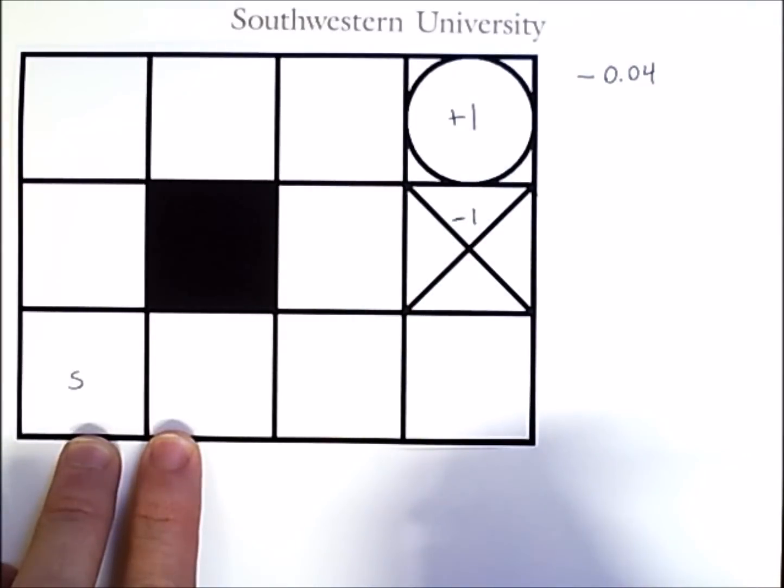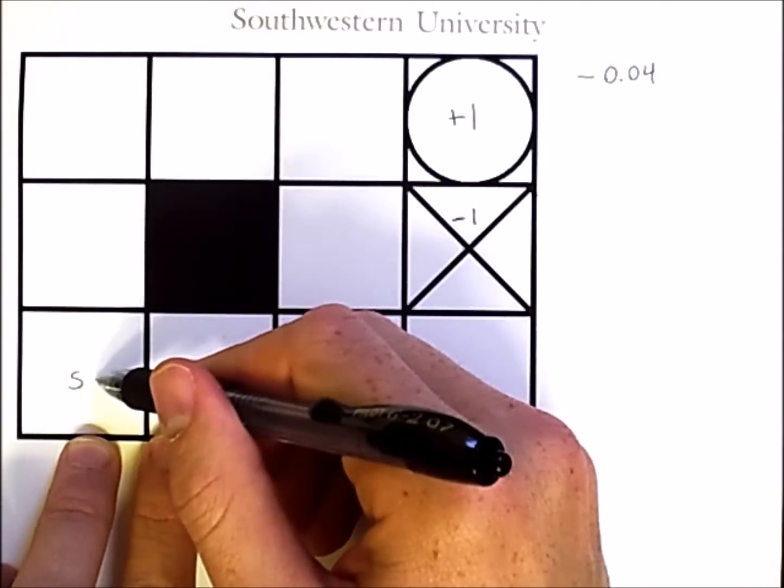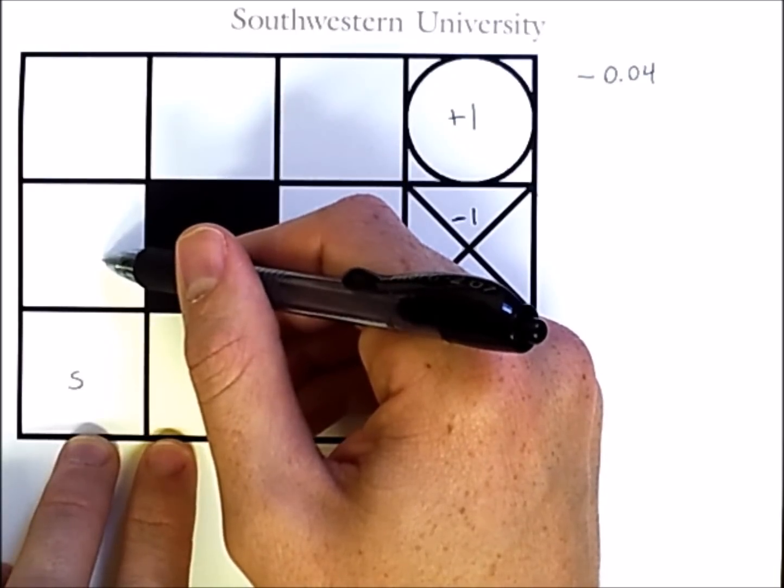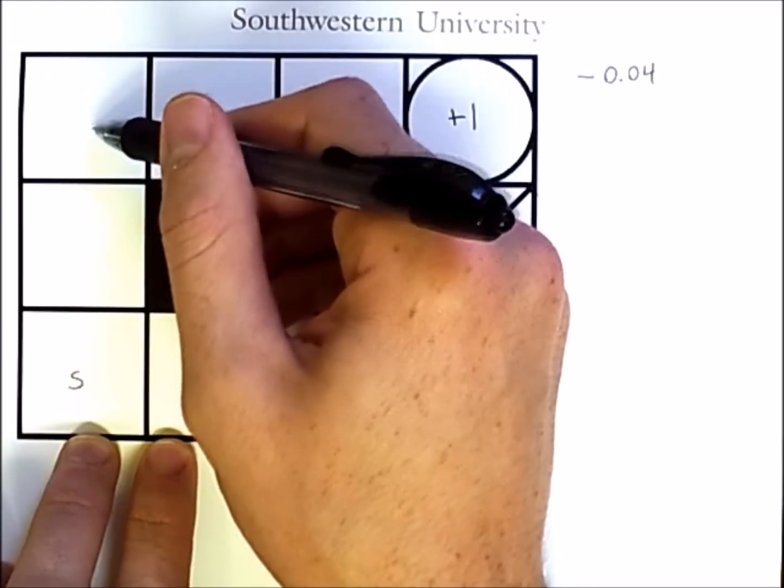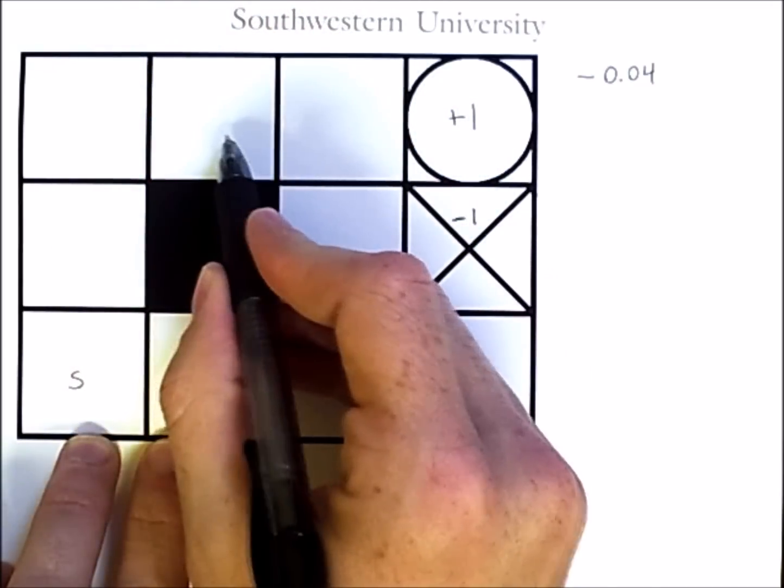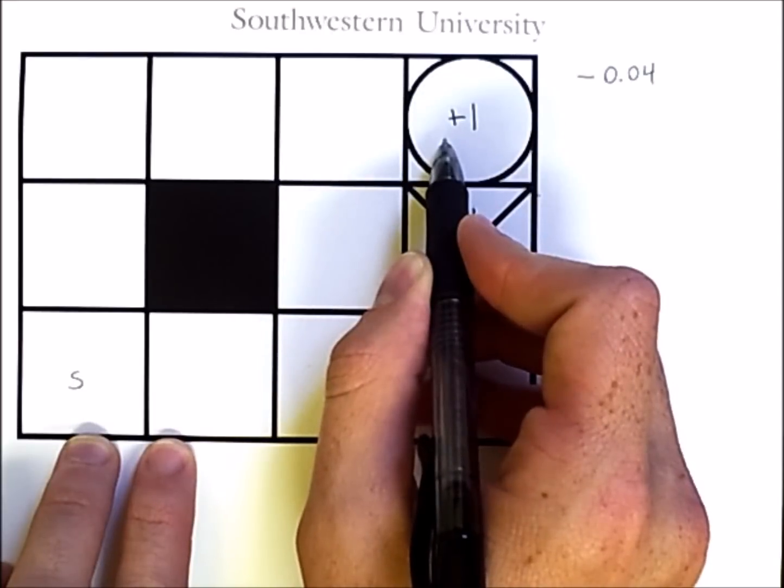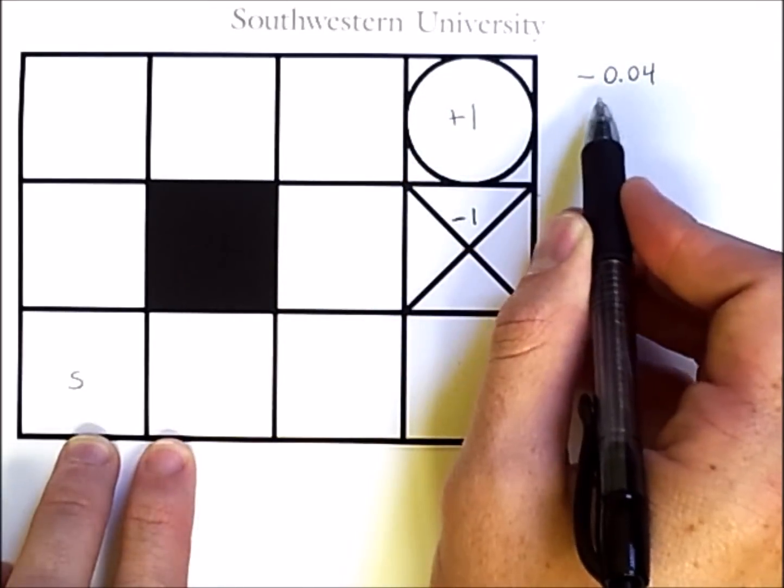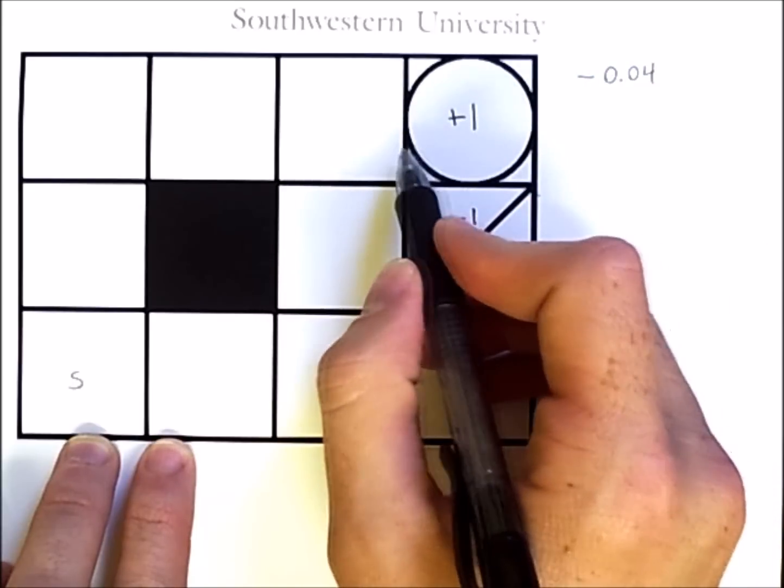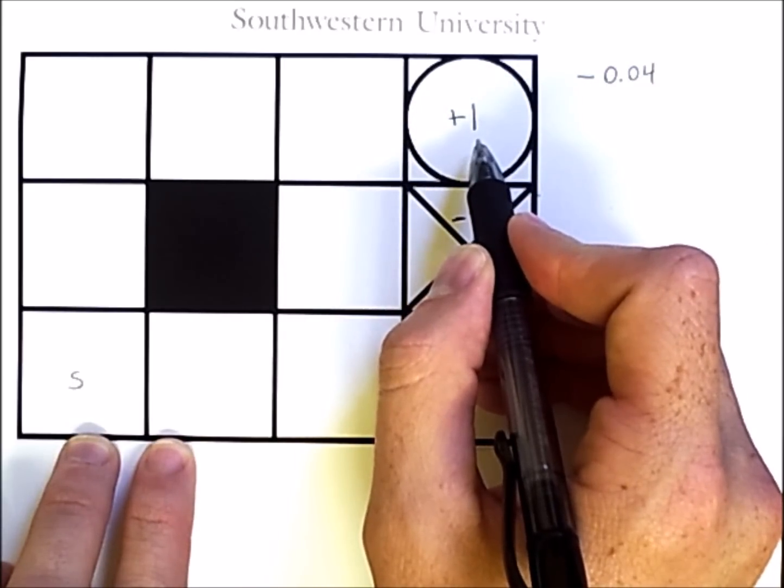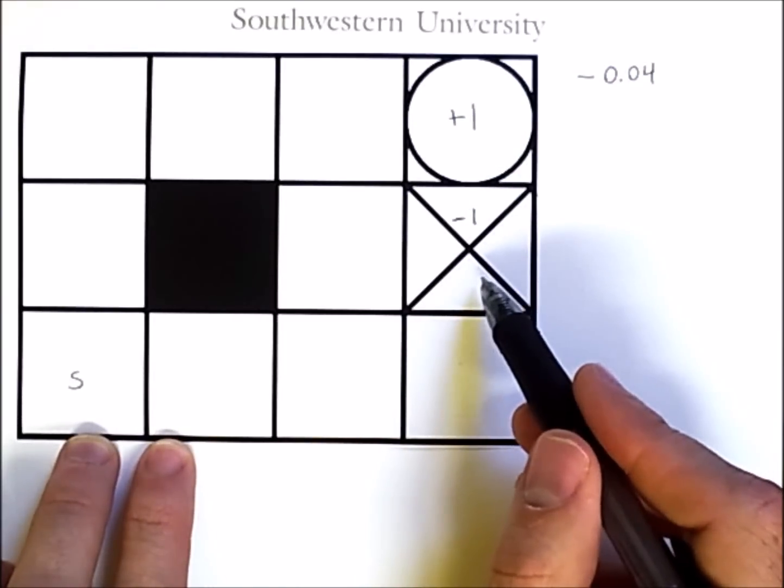That means that every movement action the agent takes will incur this small penalty. So if the agent went from here to there, it would be rewarded with a penalty of minus 0.04, and then here subtract 0.04 again, then here again, then here again. And then, even at this last step, moving from here to here, it subtracts this amount from its reward, and then gets the final terminal reward of plus 1.